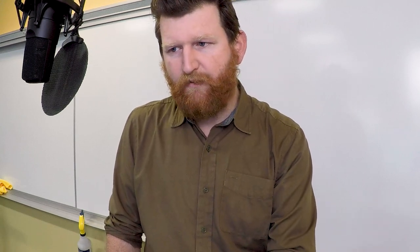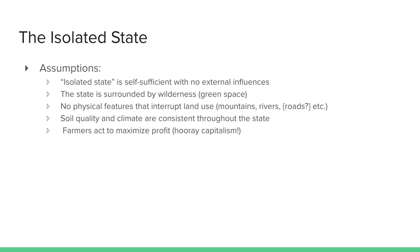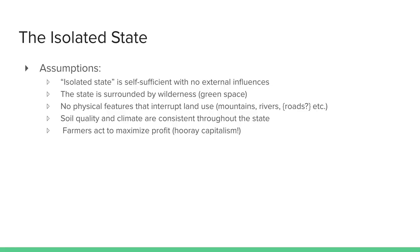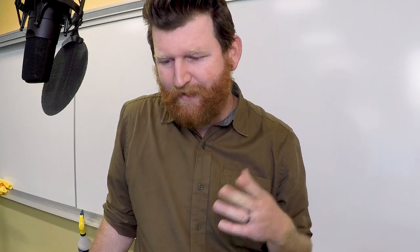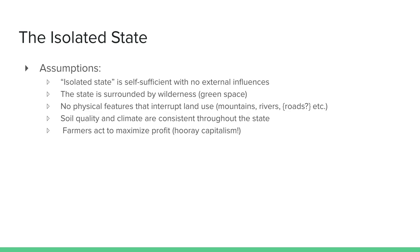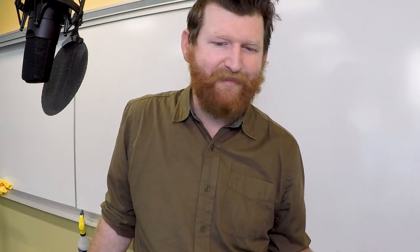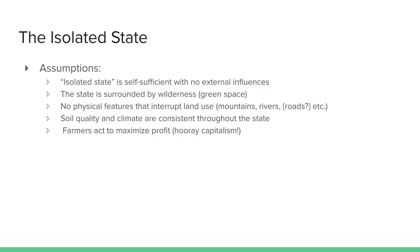Let's not get too deep into the economics. Here's what we're going to do today: we're going to try to see if von Thünen is still relevant today. Remember our last unit on globalization? This model is an isolated state. The isolated state is self-sufficient with no external influences. The state is surrounded by wilderness. There are no physical features that interrupt land use — no mountains, rivers, or roads. Soil quality and climate are consistent throughout the state. But farmers act to maximize profit — yeah, that's still true. So he's still got some relevancy.